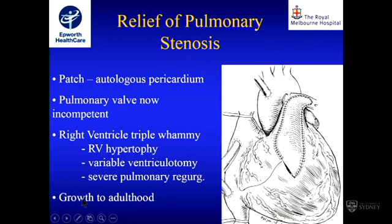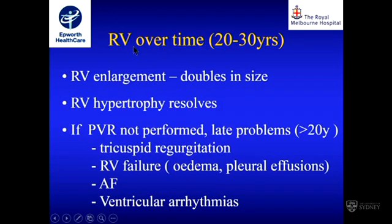Having said that, this is better than a valve replacement because it enables them to grow to adulthood. The pulmonary valve is perhaps the least important valve in the heart, and they seem to tolerate that very well — I've seen some tolerate it till they're 40 or 50 years old. However, the right ventricle over time, usually over 20 to 30 years, doubles in size. The RV hypertrophy goes away. If pulmonary valve replacement is not performed in a timely fashion, they develop late problems: tricuspid regurgitation, RV failure with peripheral edema and pleural effusions, and late atrial and ventricular arrhythmias.